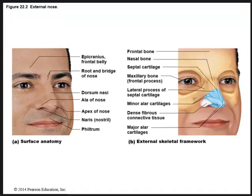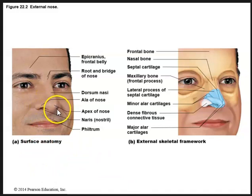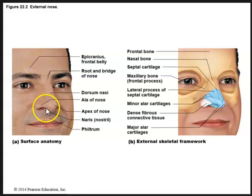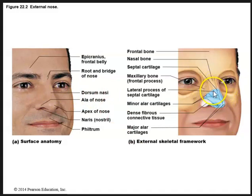Here we see the surface anatomy of the nose. We have the ala of the nose — these little wings. Here is the apex, the little pointy part. Up here would be the root and bridge of the nose. Located just above the root and bridge is the frontal belly of the muscle that helps you move your eyebrows. And then we have the nares or nostrils of the nose, and the next picture shows the different cartilages and bones that surround the nose.